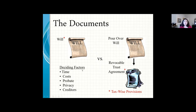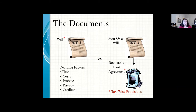A revocable trust provides great benefits because we skip all the time limits that probate has — instead of waiting up to a year, you can transfer assets much faster. However, you need enough assets to justify the higher transactional costs compared to just having a will. A revocable trust is also a private document; it never gets filed anywhere, which protects you and your beneficiaries from anyone interested in what they were receiving from your estate.